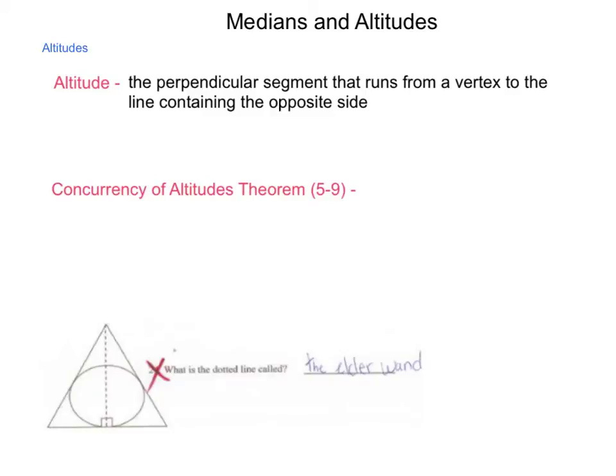Now, what makes altitudes different is that when we are looking at a triangle, such as an acute triangle, this will be inside. It will be interior to the triangle itself.